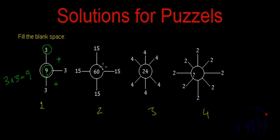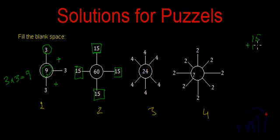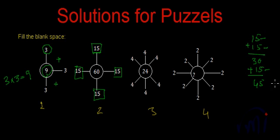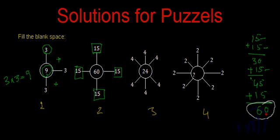In the second figure, again we have a circle in the center and we have four spokes coming out of that circle, and at the end of each spoke we have the number 15. We have four fifteens, and if we add all these fifteens — 15 plus 15 is 30, plus 15 is 45, plus 15 is 60. So if we add four fifteens we get 60, which follows the same logic.